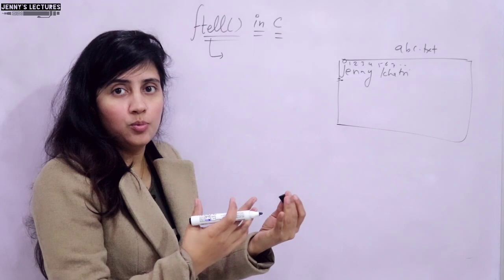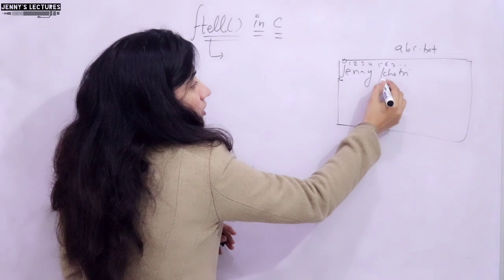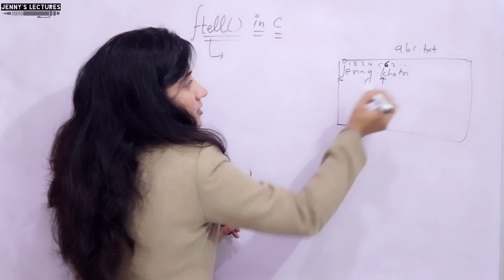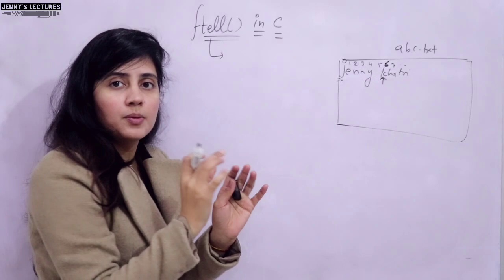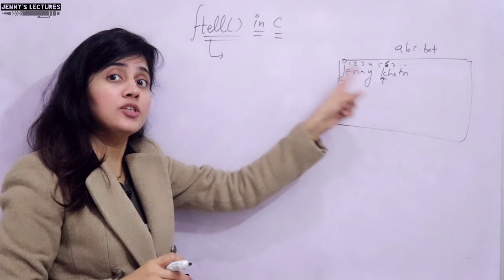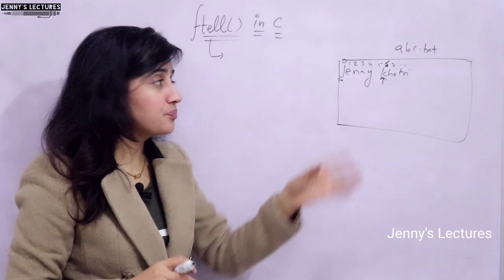If you have moved the file pointer to a specific position using fseek — say, moved it to 'K' — and then use ftell, it will return 6, because the index of 'K' is 6 from the start: 1, 2, 3, 4, 5, 6. You have skipped 6 bytes and the file pointer is now at the 7th byte. So ftell tells the position of the file pointer with respect to the starting of the file. One application of ftell is to find out the length of the file.